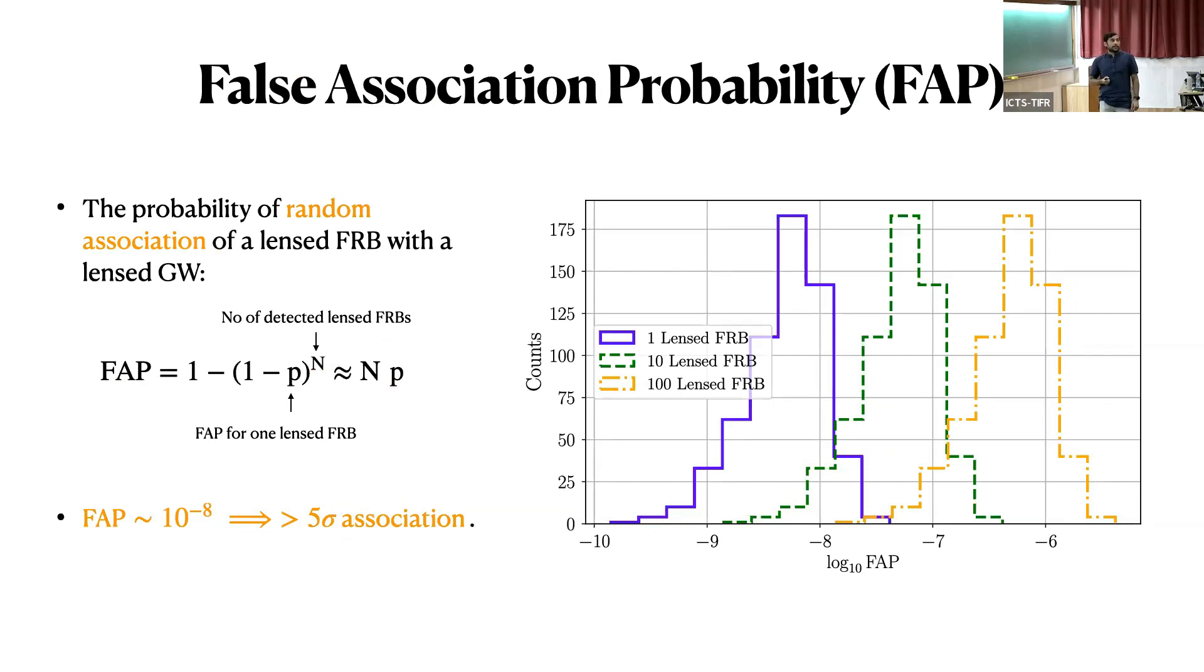Moving on further, you can ask the question whether you can falsely associate these kinds, because there will be an uncertainty in the measurement of time always. So by considering that uncertainty, can you tell us what is the confidence by which you can associate? It turns out that the association confidence is greater than five sigma here.